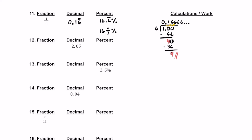For number 12, we have this decimal of 2.05. If we multiply that by 100 right away, the percent is pretty quick — that's going to be 205%. Now, if you read this decimal correctly, this is 2 and 5 hundredths because that 5 is in the hundredths place. So you can write 5 over 100. Let's divide top and bottom by 5 — that gives us 2 and 1 over 20. So for a simplified fraction, we write 2 and 1 twentieth.